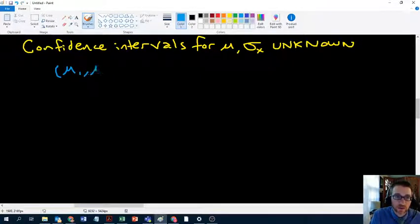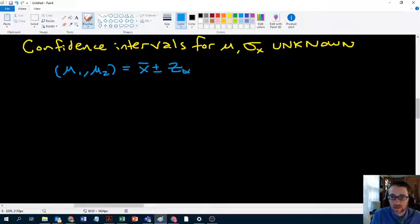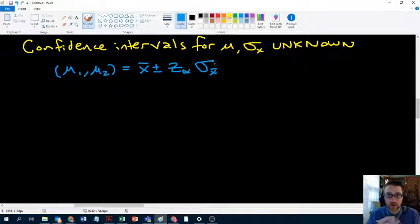We did the work to show that when you do this, mu one comma mu two equals x bar plus or minus z alpha times sigma x bar. That this is actually two z score formulas kind of mushed together. That's what gives us our lower bound and our upper bound.